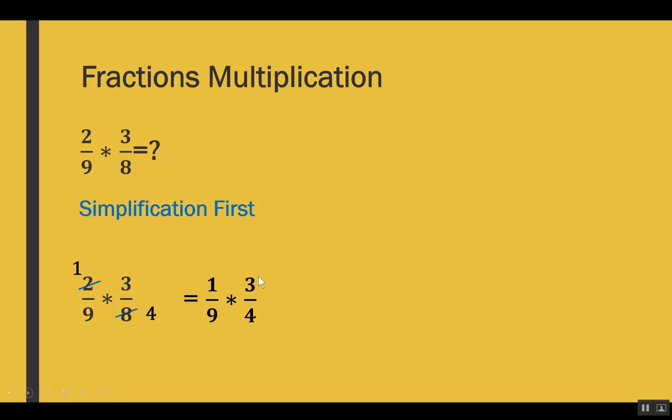Again, the 3 in the numerator and 9 in the denominator can be cut by their highest common factor, which is 3. Now these fractions can't be simplified any further, so we multiply numerator with numerator and denominator with denominator: 1 × 1 for the numerator and 3 × 4 for the denominator, giving us 1 out of 12. Whether using way 1 or way 2, we get the same result.